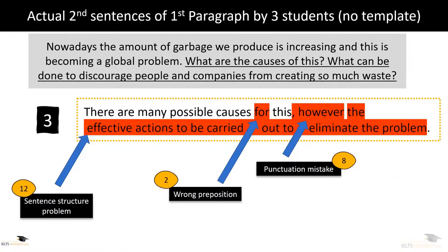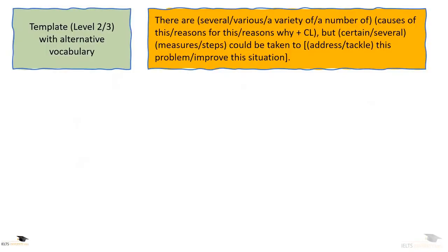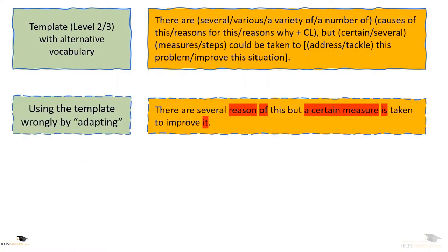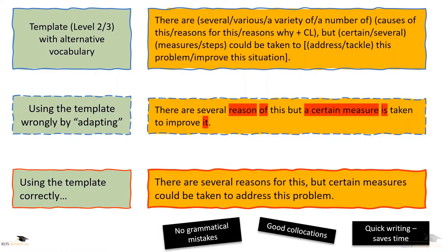Here are the mistakes. For student 1, he used the wrong preposition, the wrong tense, and overall low-level vocabulary. For student 2, there are mistakes related to two informal words, not using the article 'the,' and not using the modal verb 'can' properly. For student 3, he had problems related to sentence structure, prepositions, and punctuation. Students make a lot of mistakes — in just one sentence, so many mistakes were spotted. No wonder it's so difficult to get 7.0 in writing. If you use a template correctly, you will get a 100% error-free sentence with good collocations that can be written very fast.